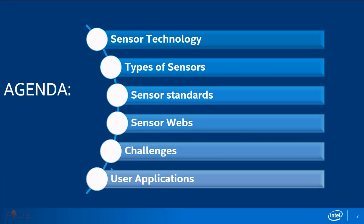Let us first go through the agenda and the topics we will discuss today. First, we will cover the various terminologies used in sensor technology. Then we will go through the different types of sensors and their use cases. Further, we will discuss the sensor standards and what are web of sensors. At last, we will look at some real-life challenges of using sensors in industrial applications and different products.